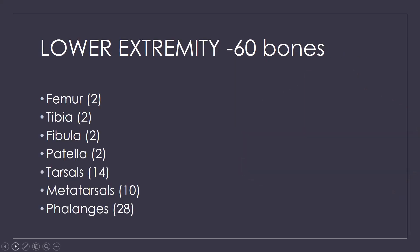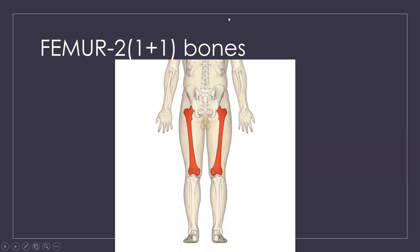We are done with the upper extremity. Now let us come to the lower extremity. In the lower extremity there are 60 bones. The first bone you will find is the femur. You have two femur bones — one on each side. The femur is the longest as well as the strongest bone in the human body, located in your thigh.